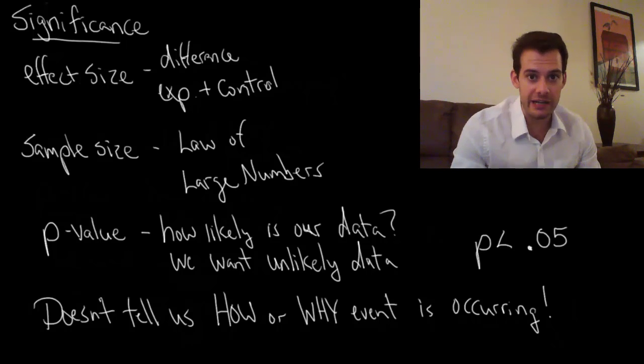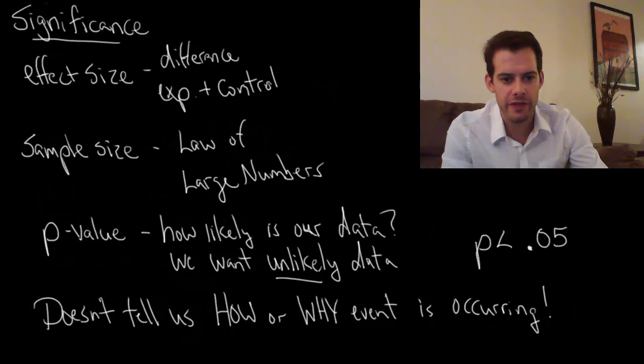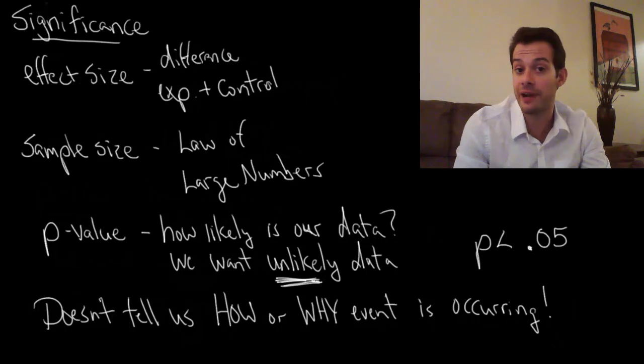really unlikely to happen on its own. So keep that in mind whenever you think about a p-value. It just tells you this is unlikely, this is probably not chance but it could be still, but it's very unlikely for that to happen. But it doesn't tell us anything about the hypothesis. It doesn't tell us how or why the event is occurring.